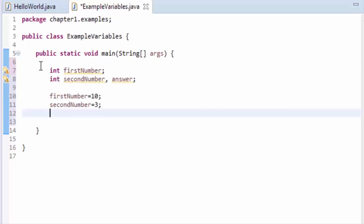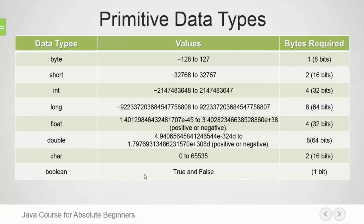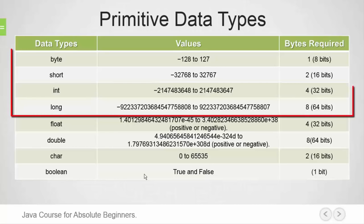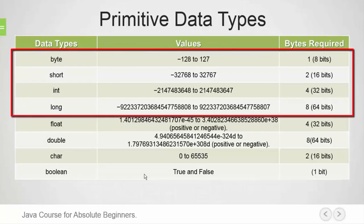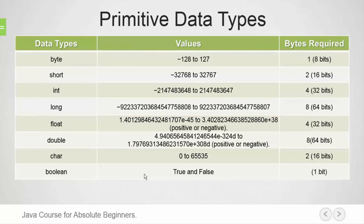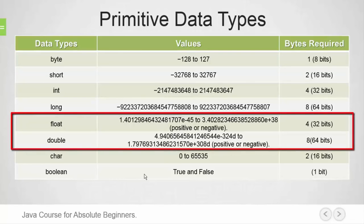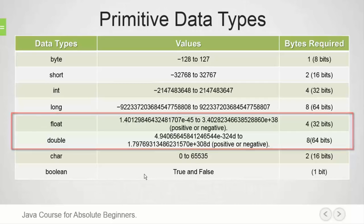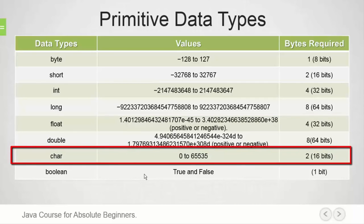A variable's data type can be a reference data type or a primitive data type. Primitive data types are built into the system — they are not objects. They are specific values that can easily be stored by a computer using a specific amount of memory. There are 8 primitive data types. The four integer types — byte, short, int, and long — can be positive, negative, or zero. The same is true for the two floating point types: float and double. Floating point numbers, also known as real numbers, are used when evaluating expressions that require fractional precision. The char type can hold one Unicode character, for example A, B, C, 7, or asterisk. Unicode is a character set that provides a unique number for every character.